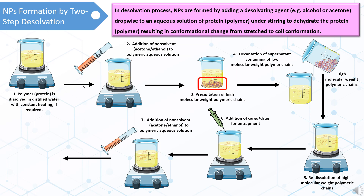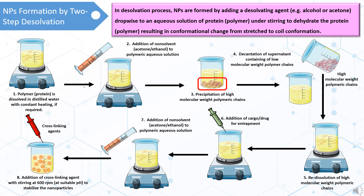As a final step, a suitable crosslinking agent is added dropwise with stirring to crosslink the polymer chains at a suitable pH to stabilize the nanoparticles. Thus, we can formulate nanoparticles by two-step desolvation.